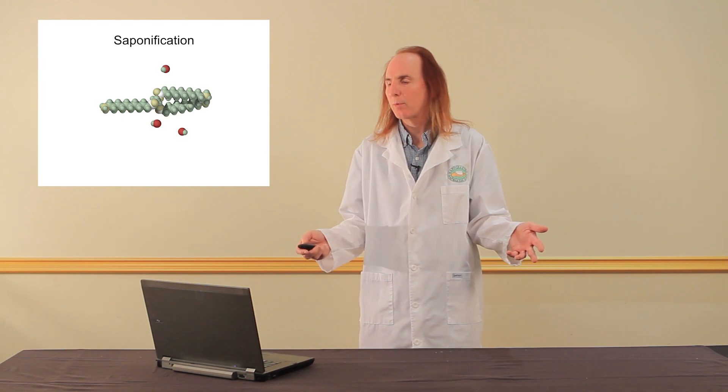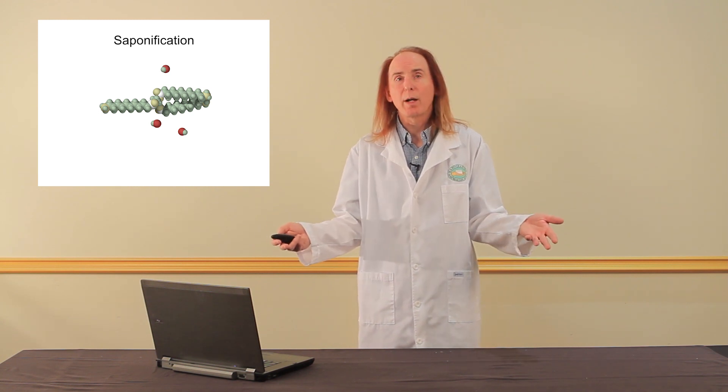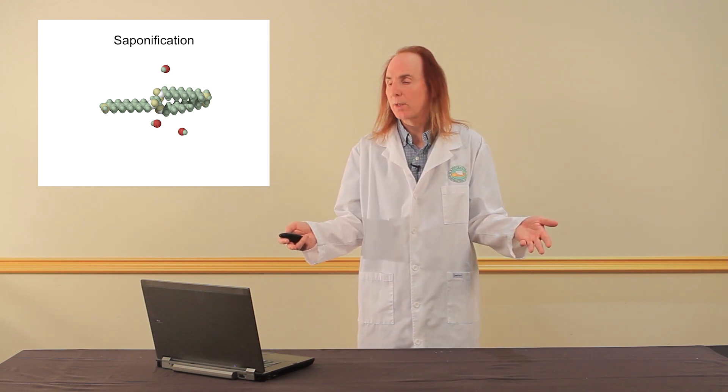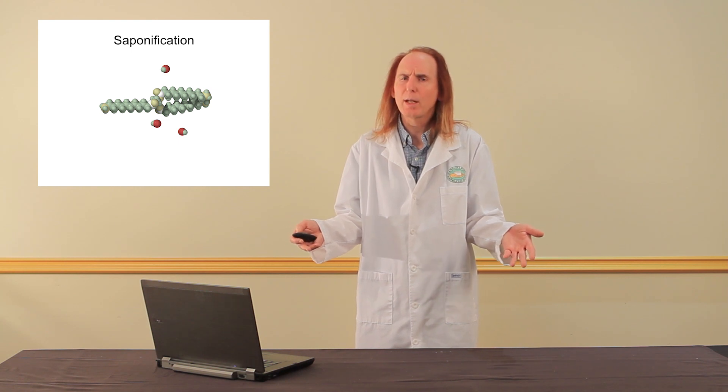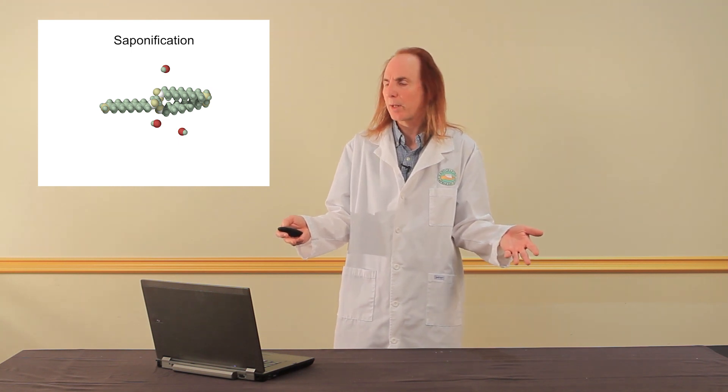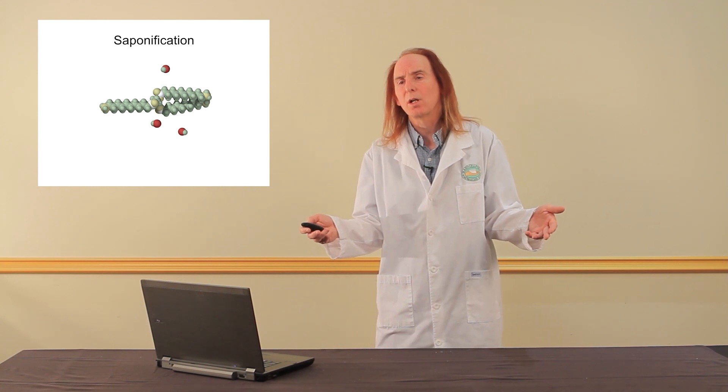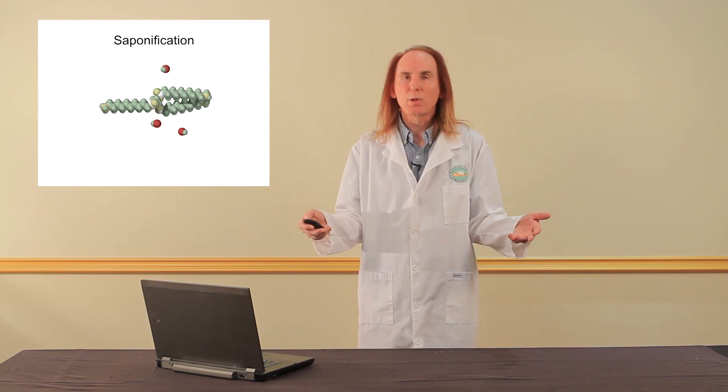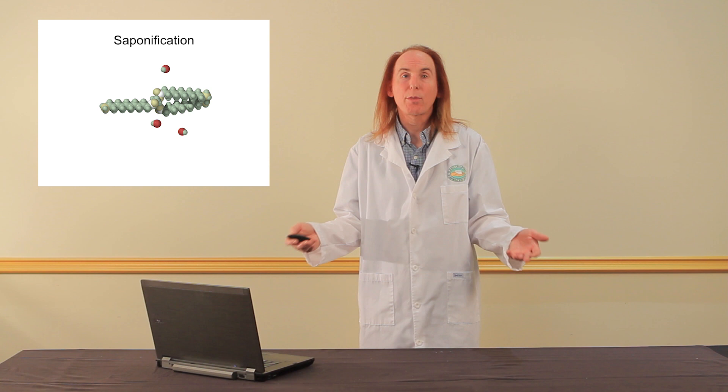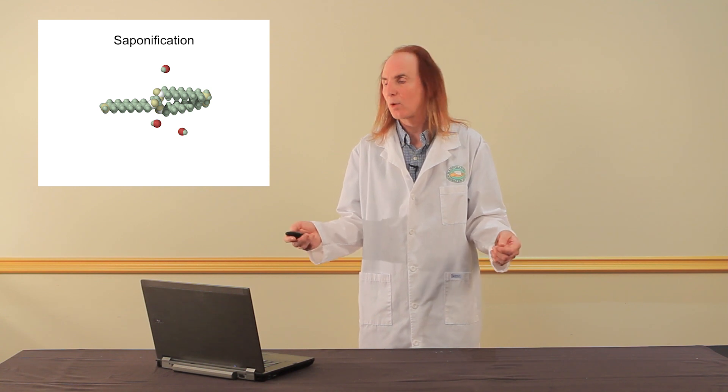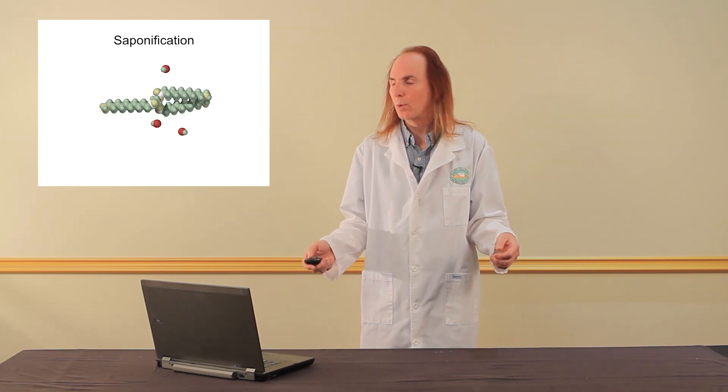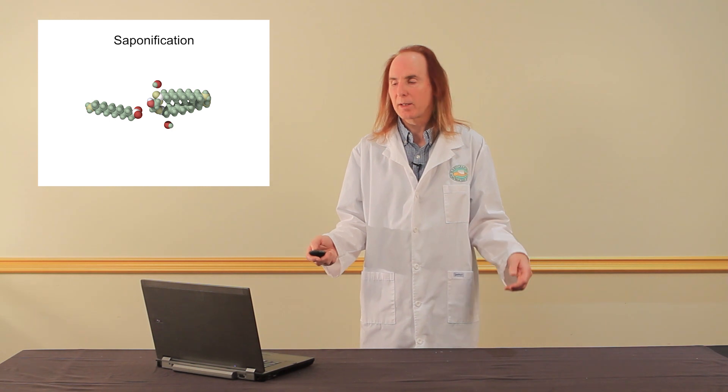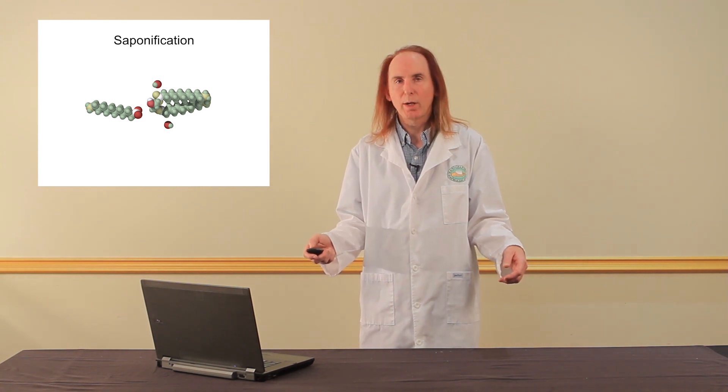We're now going to explore saponification. I start with my glycerol trilaurate molecule in the center, and I have three hydroxide ions floating around next to it. Each of the hydroxide ions is colored red. Red atoms are attracted to white atoms, and there are three white atoms right at the center of my glycerol trilaurate molecule. So one of them is going to attack. Bink. There it went. Makes a noise.